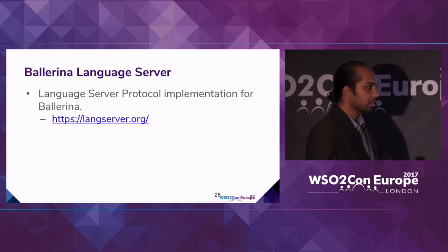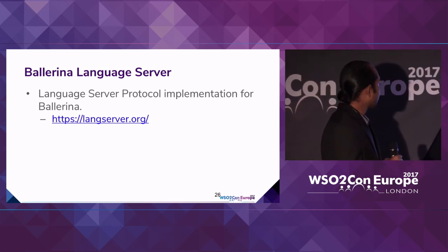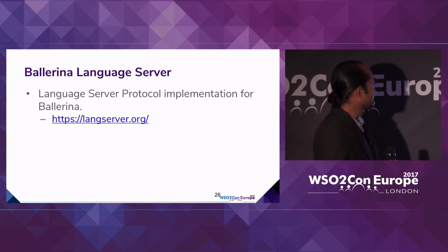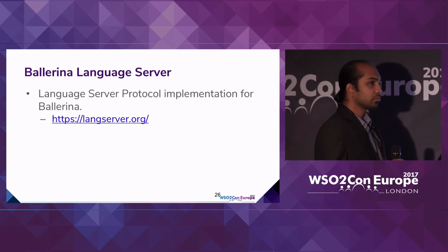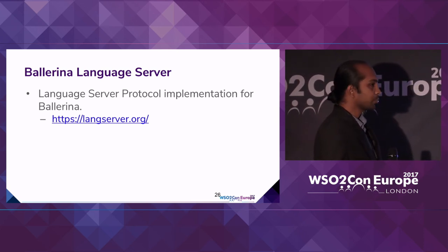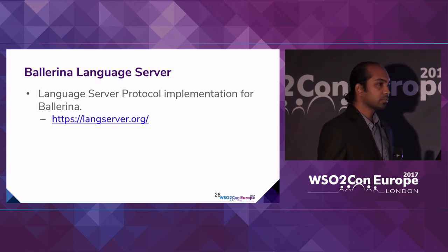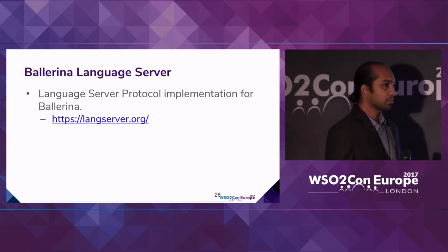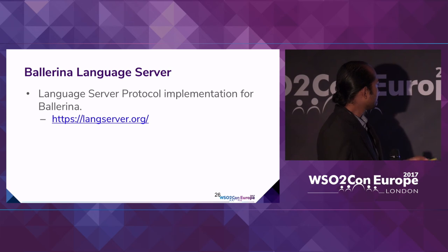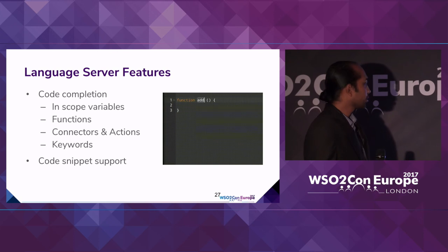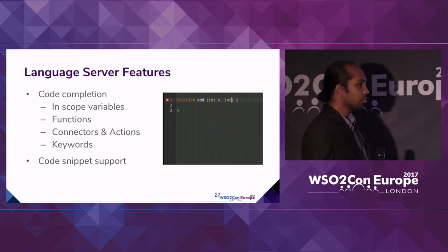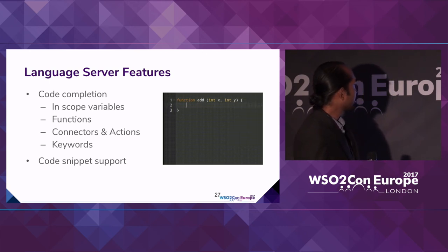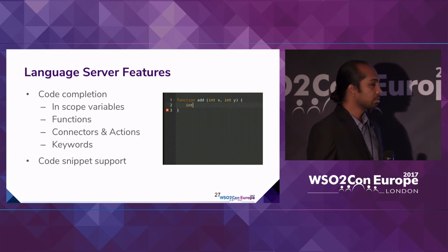The next feature is the language server. The language server protocol is a concept introduced by Microsoft to support intelligence for editors. If you know VS Code, JavaScript intelligence is supported through a JavaScript language server. Similarly, for Ballerina we have written a language server to support code completion and code snippets. Via the language server, we give suggestions for in-scope variables, functions, connections, and keywords, making it quite easy to write your program.